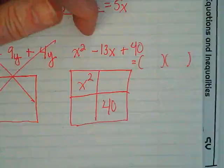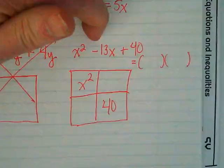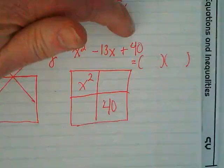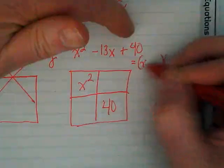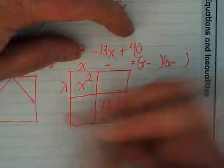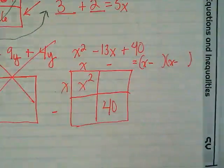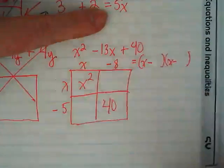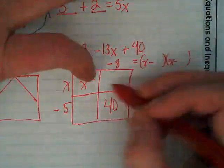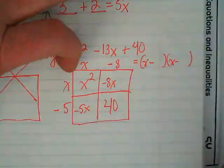Here's a hint: when there's a negative in the middle and a positive at the end, if you're multiplying and end with a positive, both of them have to be negative. So whatever we get here, the x is going to have a minus for both. Negative 8 and negative 5. If I multiply negative 8 times negative 5, do I get positive 40? Yes. And negative 8x plus negative 5x gives us negative 13x. Yes.